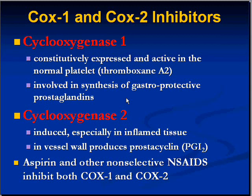We can't really talk about the toxicity of aspirin unless we bring in the concept of COX-1 and COX-2. The best way to understand COX-1 and COX-2 inhibition is to realize that aspirin and other NSAIDs inhibit both COX-1 and COX-2. COX-1 is cyclooxygenase-1 and COX-2 is cyclooxygenase-2. Aspirin inhibits both.